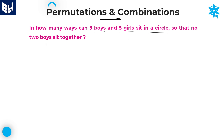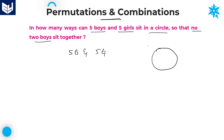Here we need to arrange five boys and five girls in a circle, with the condition that no two boys sit together. When no two boys sit together, you can first arrange all five girls.